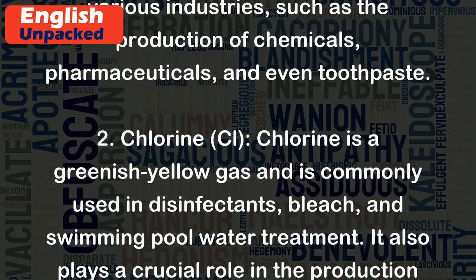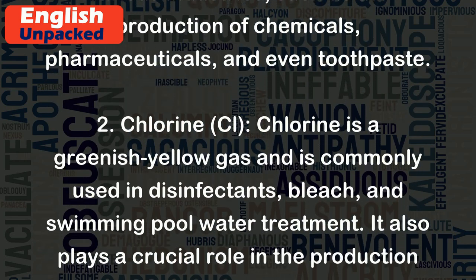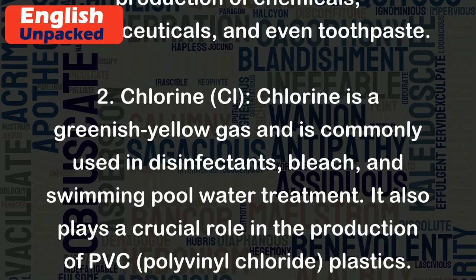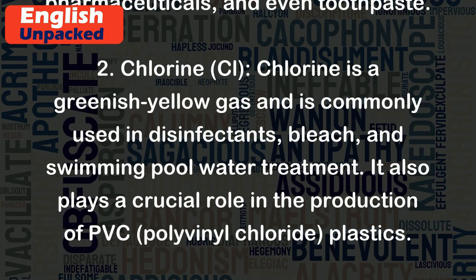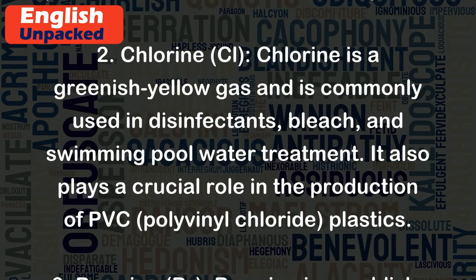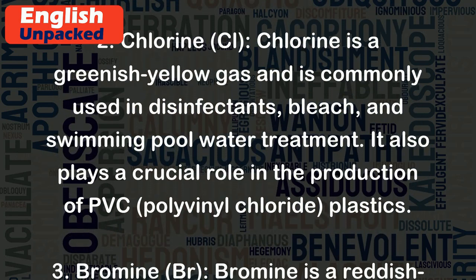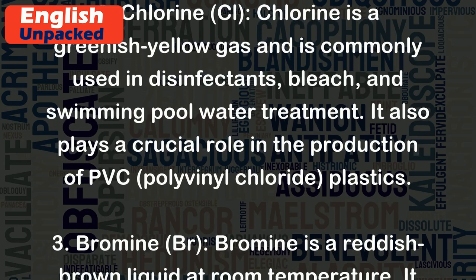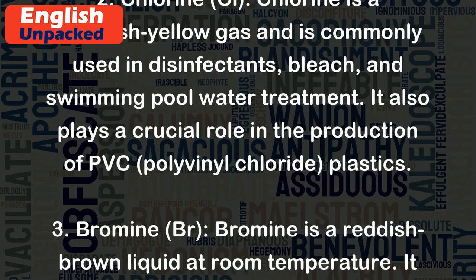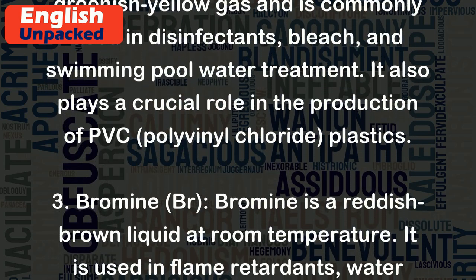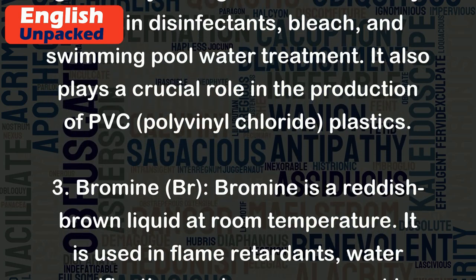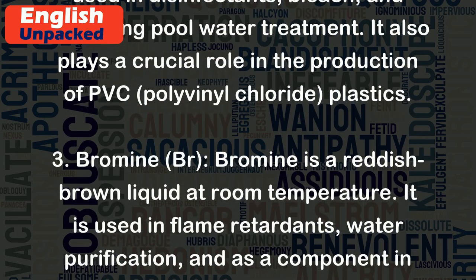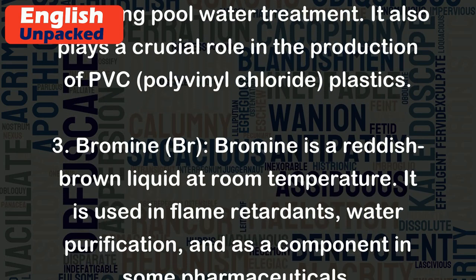2. Chlorine (Cl). Chlorine is a greenish yellow gas and is commonly used in disinfectants, bleach, and swimming pool water treatment. It also plays a crucial role in the production of PVC (polyvinyl chloride) plastics.